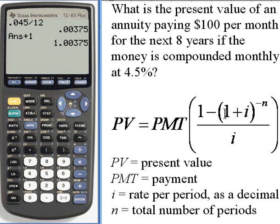Now that we've got 1 plus i, we want to raise that to the negative n power. So I'll use the raise to button, that's here on the right side underneath the clear button. Let's get the negative in before we forget it. So we're going to raise the answer to negative n, and n is the total number of periods.